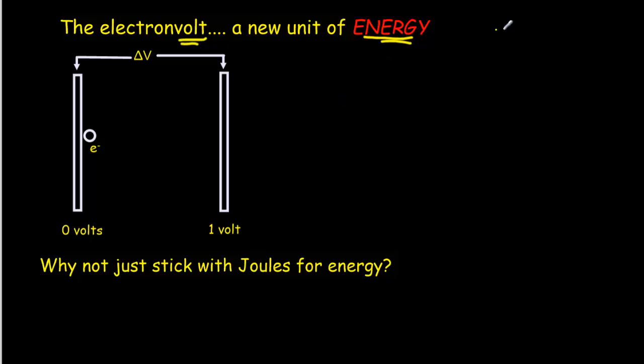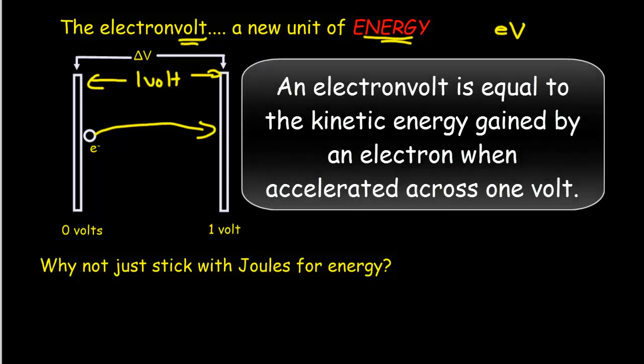So this electron volt, which goes by the symbol eV, it's just the amount of kinetic energy gained by an electron if it's accelerated across exactly 1 volt. So if we make it 1 volt across our plates, the electron will accelerate across the plates and it will gain a kinetic energy equal to 1 electron volt. That's how we define the electron volt. So an electron volt is equal to the energy gained when an electron is accelerated across 1 volt.